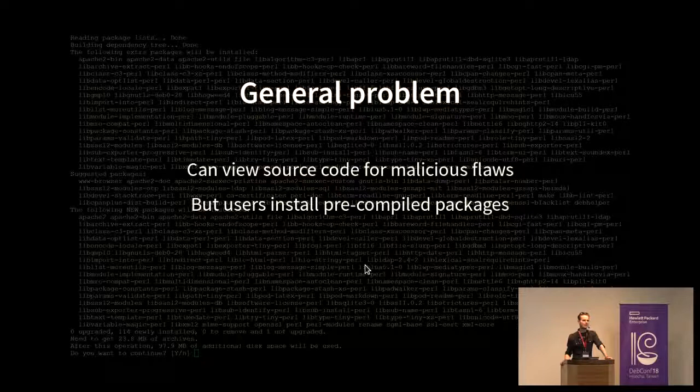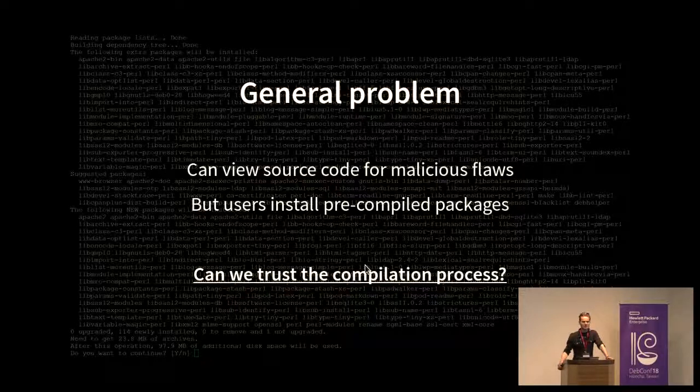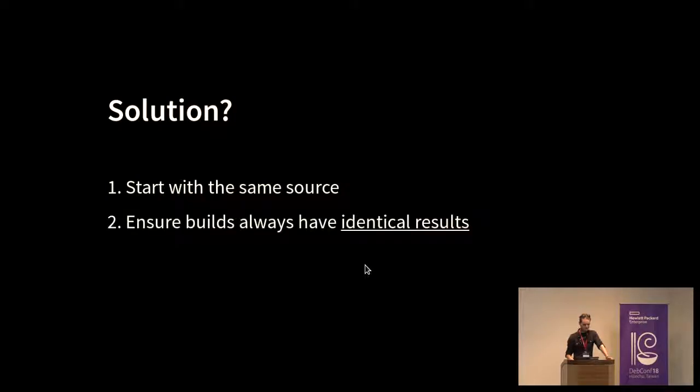So what's the general problem here? The general problem is once we can view source code for malicious flaws, we can send it to auditing teams, we can look through it ourselves. Most users are basically installing pre-compiled software. They're downloading ISOs and running live distributions. They are doing apt-get install. And can we trust this compilation process? Can we actually trust what is going on between the source code and these pre-compiled binaries that we are all pretty much using?